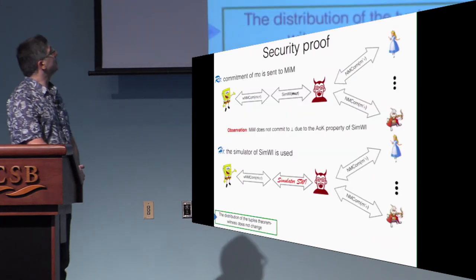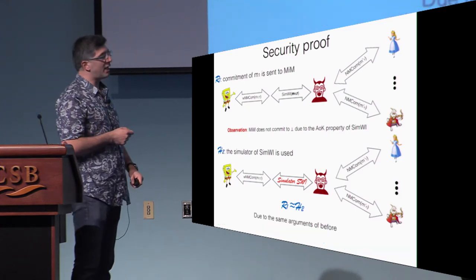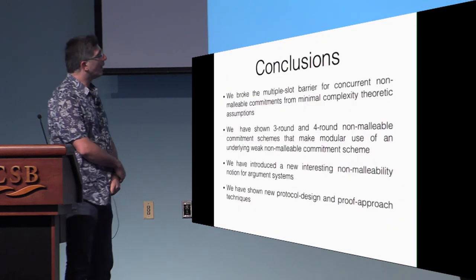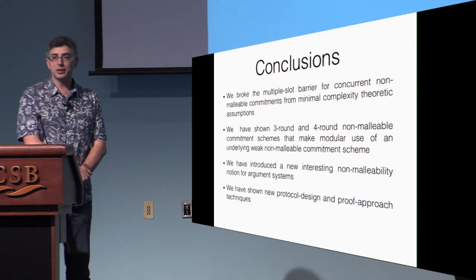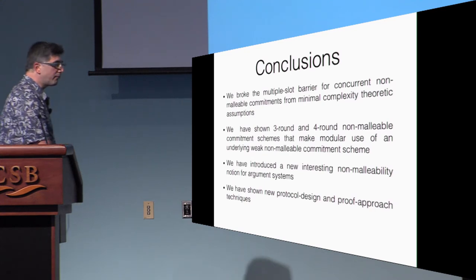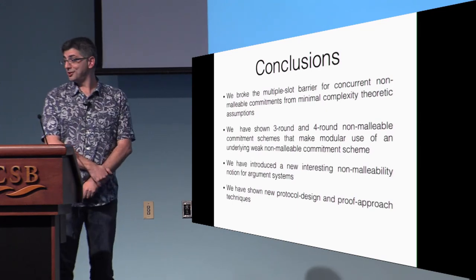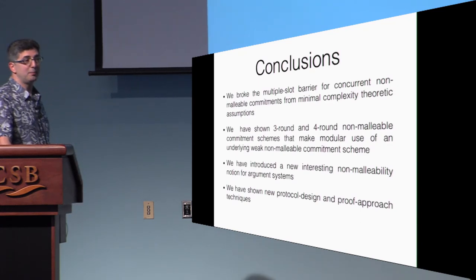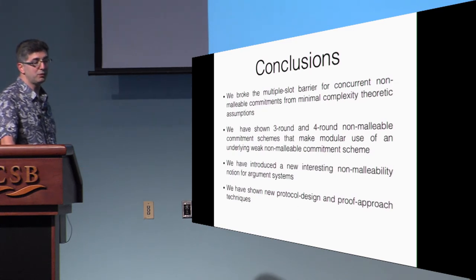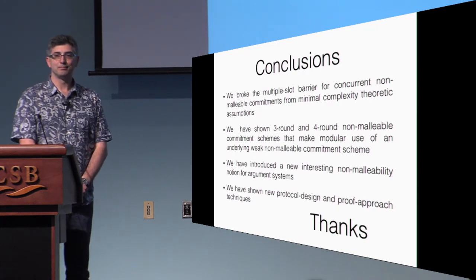Now that we have this important component, we put together simWI and weak non-malleability. The proof is smooth because simWI completely resolves the previous attack: when you switch from prover to simulator, the man-in-the-middle does not change the witnesses encoded on the right, so we can run a reduction to the weak non-malleable commitment. The reduction is further simplified because the weak non-malleable commitment is public coin. To conclude: we broke the multiple-slot barrier for concurrent non-malleable commitments using minimal complexity assumptions, with three- and four-round constructions in a modular framework. Thank you.